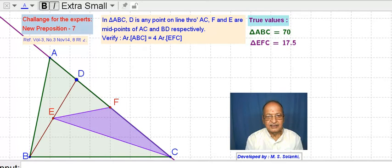We named it as New Proposition 7. Reference, volume number 3, volume 3, number 3, 3rd November, 14th of a magazine called Right Angle.